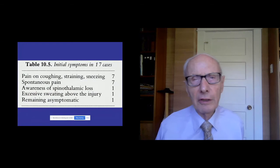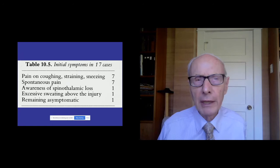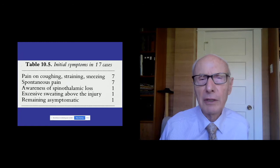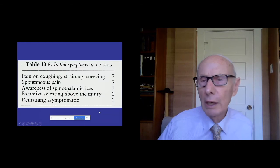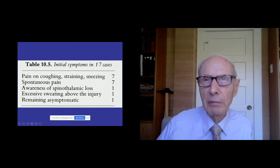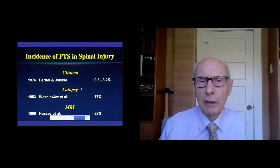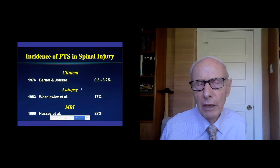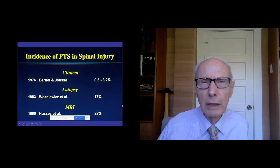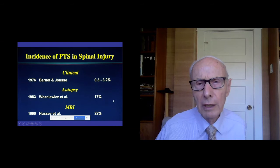Symptoms — this is an old slide — particularly include pain with coughing, straining, or sneezing, spontaneous pain, and loss of sensation. People with a spinal cord injury may have excessive sweating above the level of the injury. Some people with a syrinx may be asymptomatic and it may be picked up only as an incidental finding on imaging. The recognition of post-traumatic syringomyelia has increased incredibly since the advent of MR scanning.